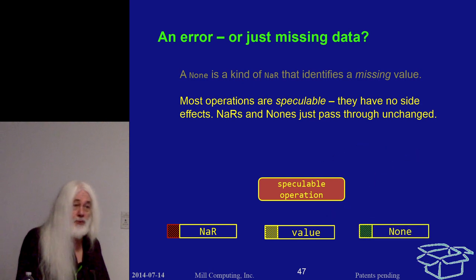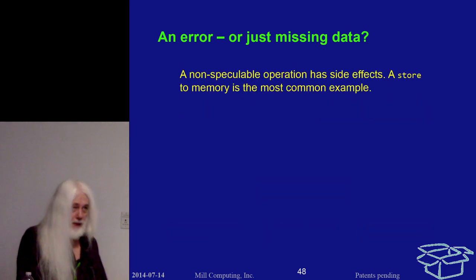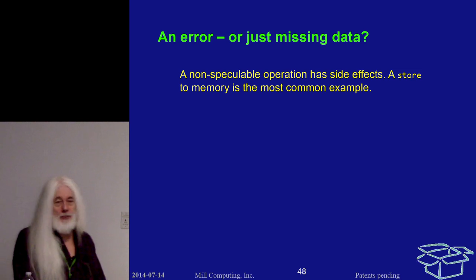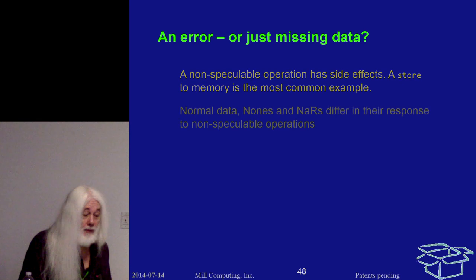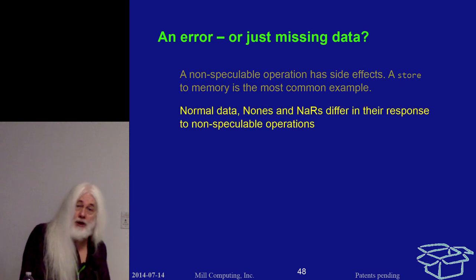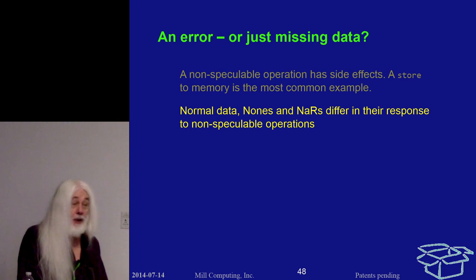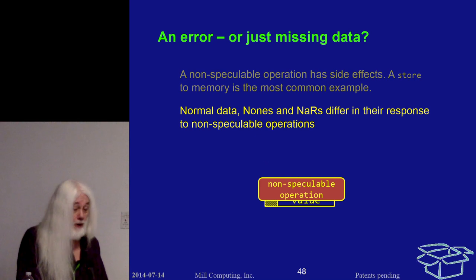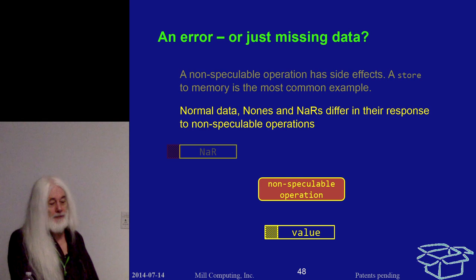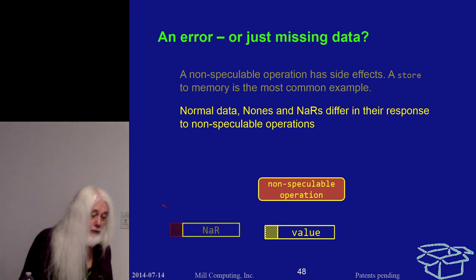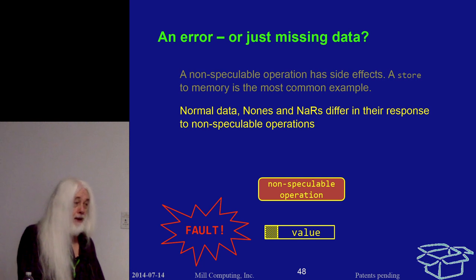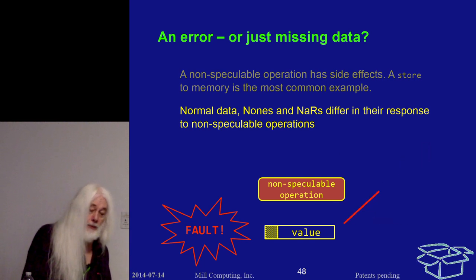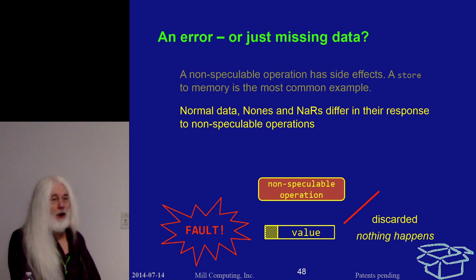A NUN is a kind of NAR with the NAR bit set, but the kind value says this is not an error — just data that isn't here yet. Non-speculable operations are those with side effects, the most common example being a store to memory. A NAR passed through a non-speculable operation throws a fault. A NUN passed through a non-speculable operation is simply discarded — no side effects, suppressed — nothing happens.